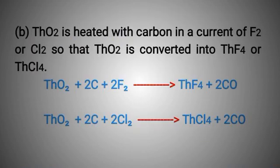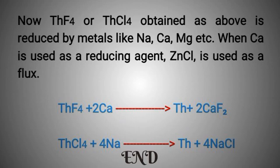Method B: Thorium dioxide is heated with carbon in a current of fluorine or chlorine so that thorium dioxide is converted into thorium tetrafluoride or thorium tetrachloride. ThO₂ + 2C + 2F₂ → ThF₄ + 2CO₂; ThO₂ + 2C + 2Cl₂ → ThCl₄ + 2CO₂. Thorium tetrafluoride or thorium tetrachloride is then reduced by metals like sodium, calcium, or magnesium. When calcium is used as a reducing agent, zinc chloride is used as a flux: ThF₄ + 2Ca → Th + 2CaF₂. ThCl₄ + 4Na → Th + 4NaCl.